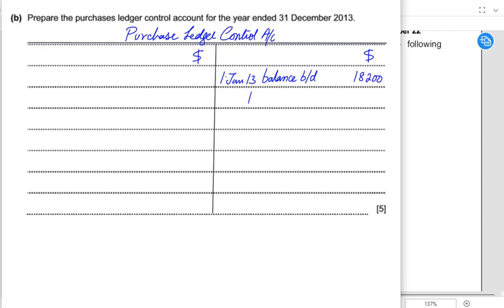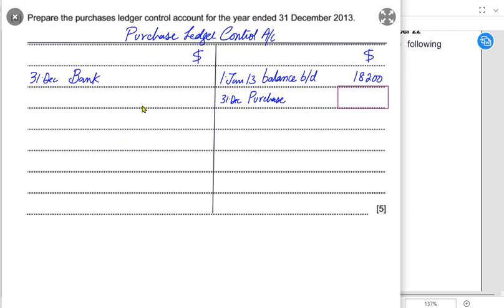When we buy goods on credit, the entry would be: purchases account is debited and the liability account is credited. When we pay our suppliers, our liability will go down, so the entry would be: bank is credited and liability is debited. This purchase value is not given — and that is the entire purpose of preparing this PLCA: to find the credit purchase figure.